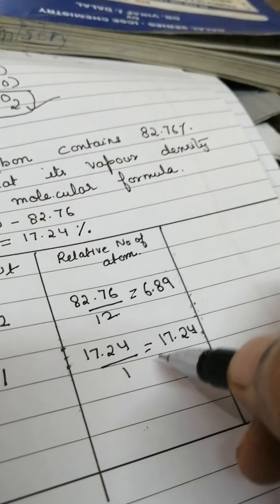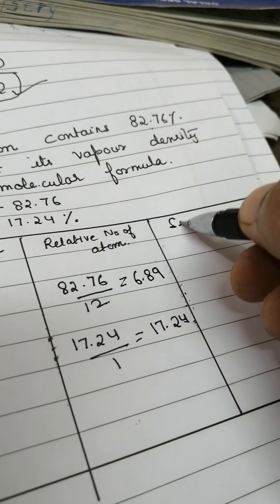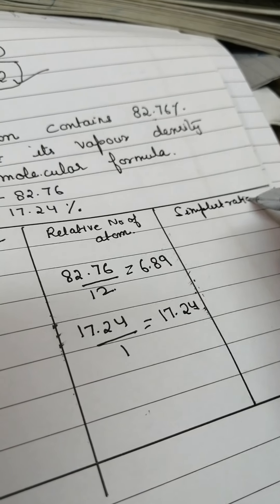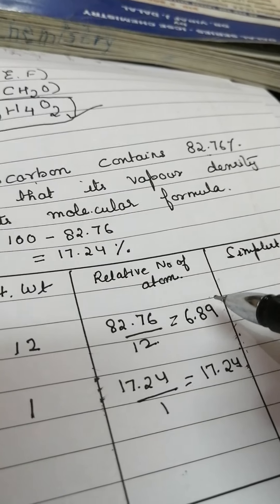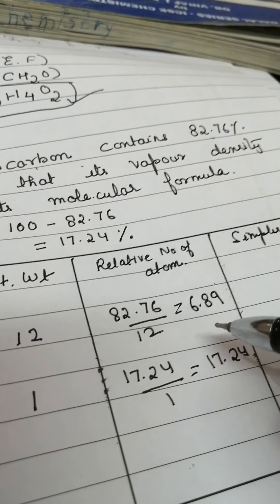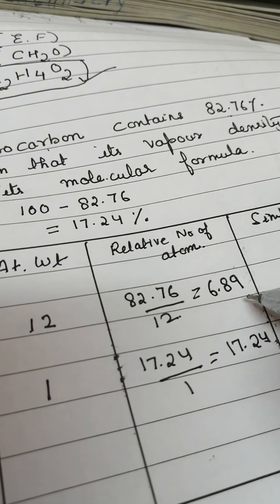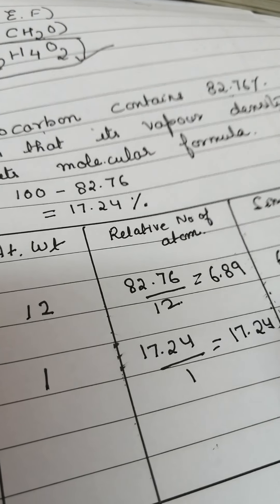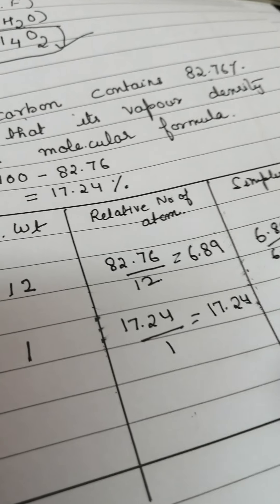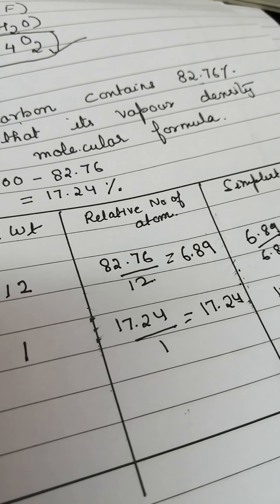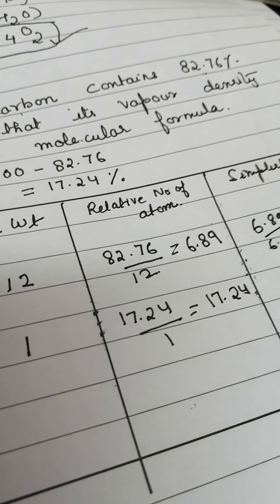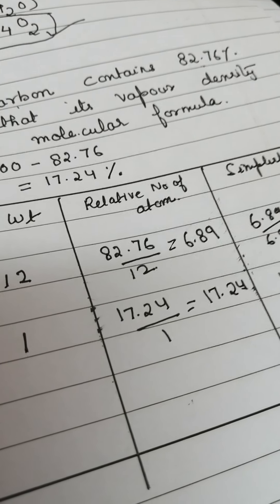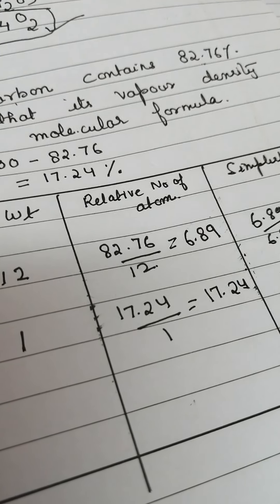After the relative number of atoms, we need to find the simplest ratio. To do this, we divide both values by the smallest number, which is 6.89. So: 6.89 divided by 6.89 gives 1, and 17.24 divided by 6.89 gives 2.5.